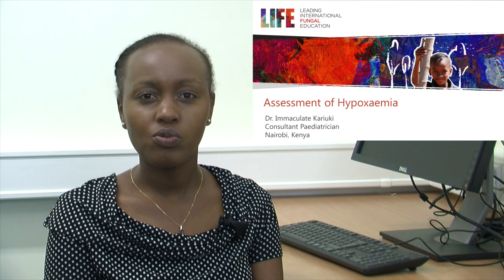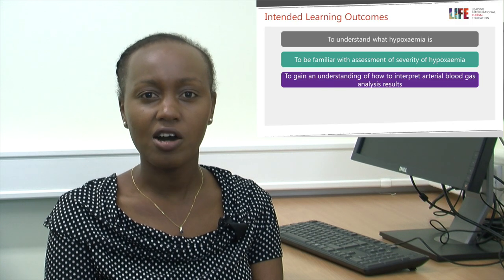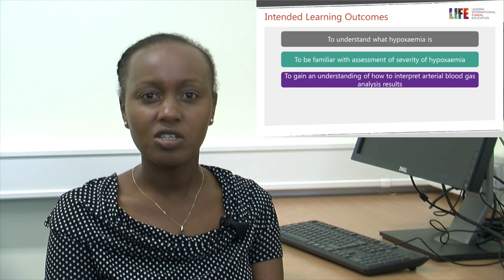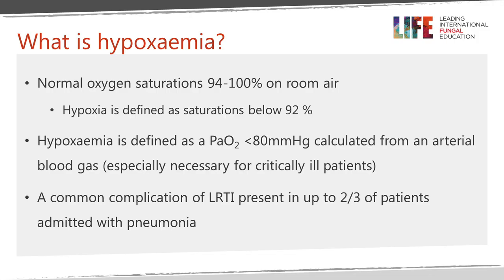We talked about Pneumocystis pneumonia being a hypoxic pneumonia. So what is hypoxemia? Hypoxia is defined as oxygen saturations of less than 92% on room air, and it is a very common complication of lower respiratory tract infection in children, present in up to two-thirds of patients admitted with pneumonia in some series.